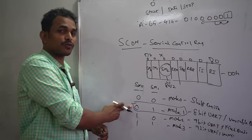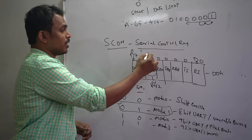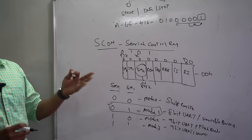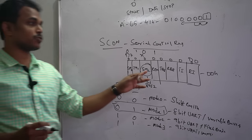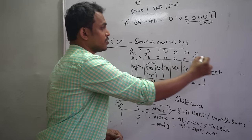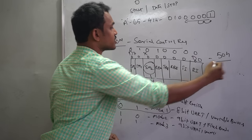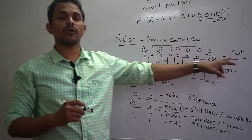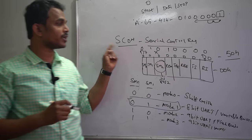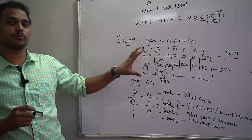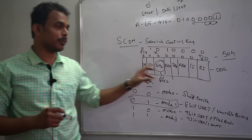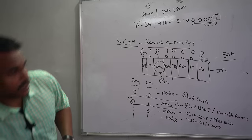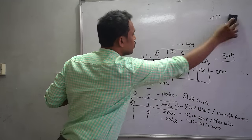To program the SCON register, Mode 1 is selected by setting SM0 SM1 to 01. SM2 is set to 0 (don't care), and REN is set to 1 to enable both transmission and reception. TB8, RB8, TI, and RI remain 0. This gives a final hexadecimal value of 50H to be assigned to the SCON register. The SCON register is also bit-addressable, meaning individual bits can be accessed in assembly or C.